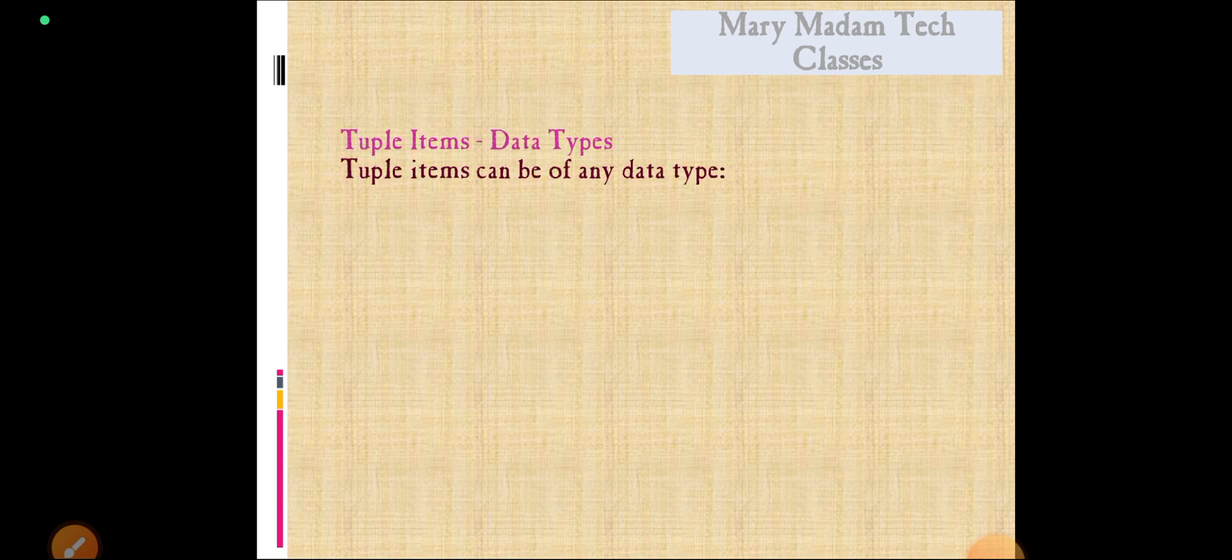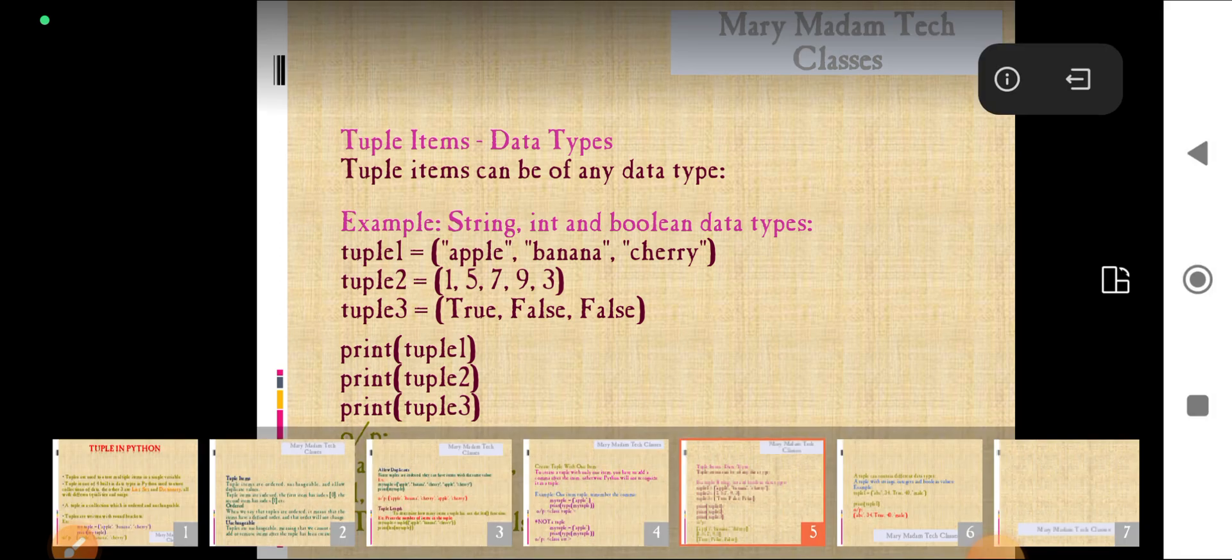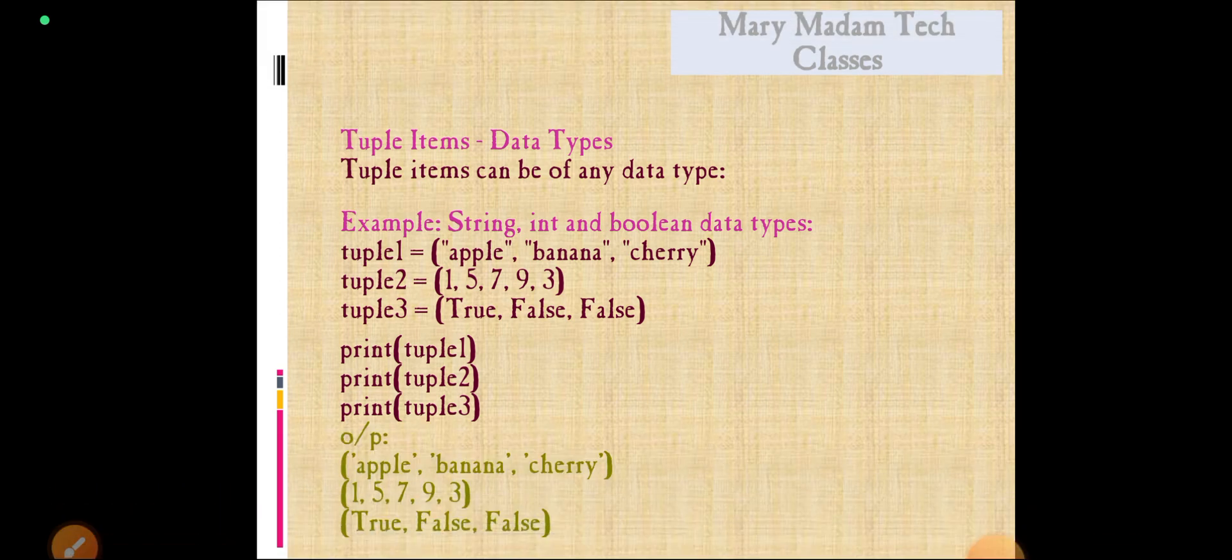The tuple items are mentioned with the data types. See the example: tuple1 with the string, tuple2 with integer data type, tuple3 with boolean data type. I want to print all these things. I will show all these things in Python window.